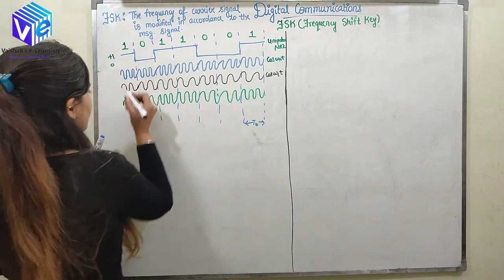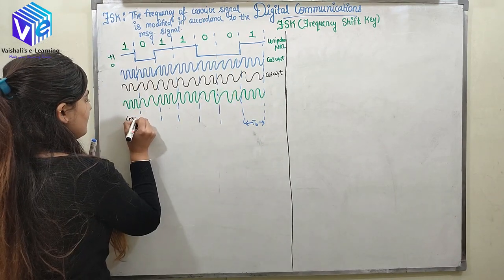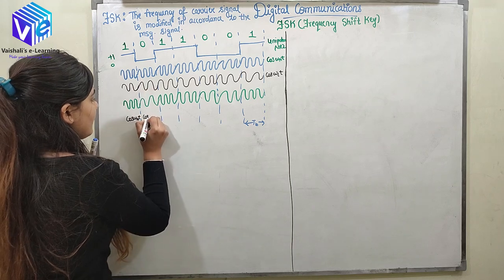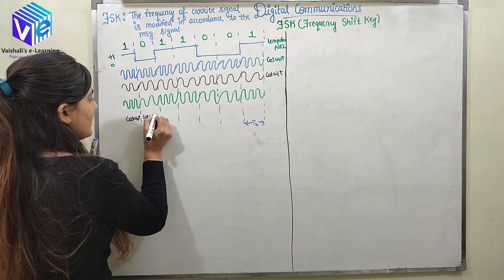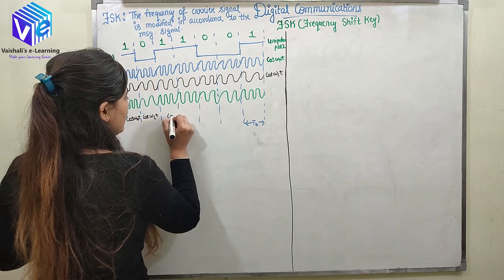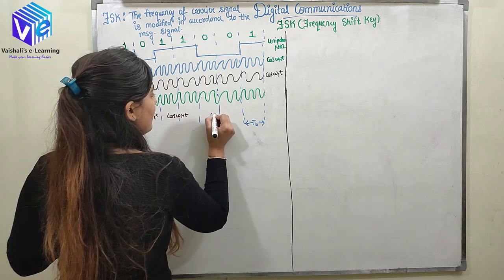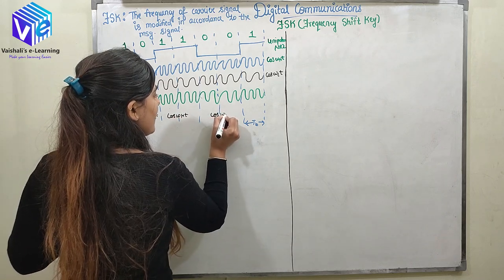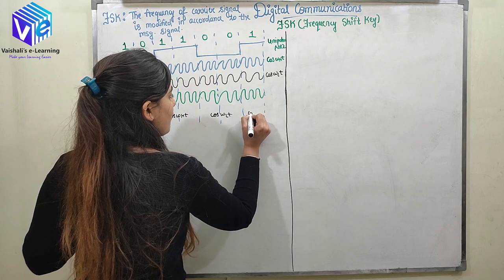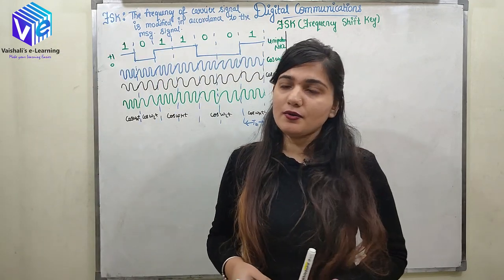So for the bit sequence 1011001: 1 is represented by cos(ω_H * t), 0 by cos(ω_L * t), 1 by cos(ω_H * t), 1 by cos(ω_H * t), 0 by cos(ω_L * t), 0 by cos(ω_L * t), and 1 by cos(ω_H * t).